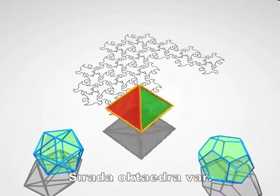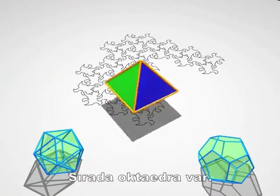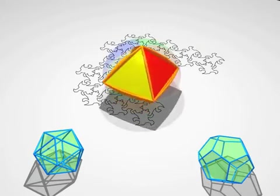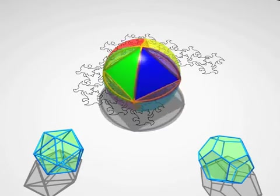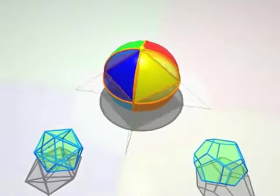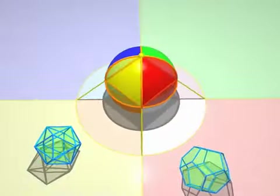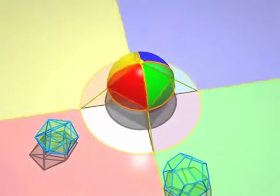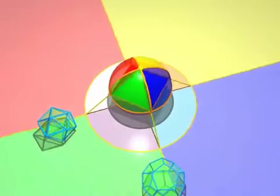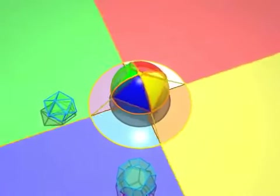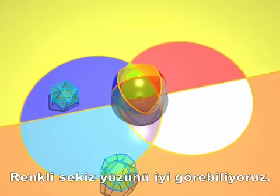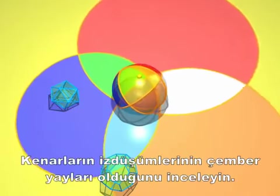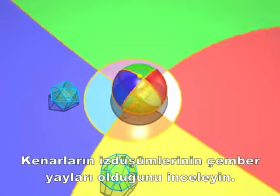And now here comes an octahedron. You see the eight colored faces. Look how the projections of the edges are arcs of circles.